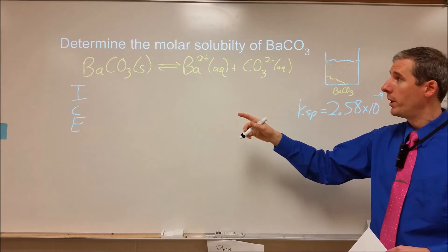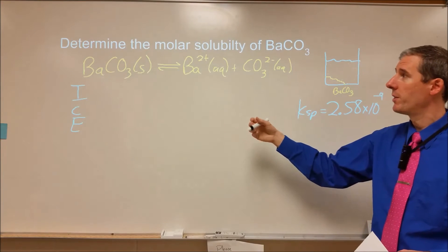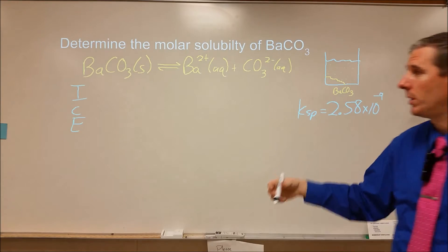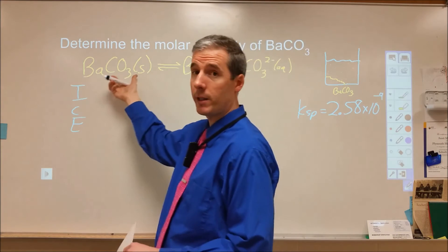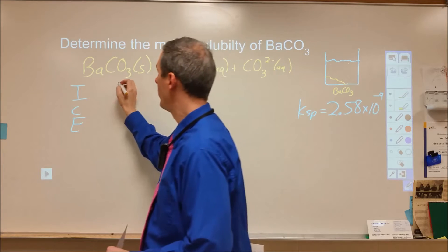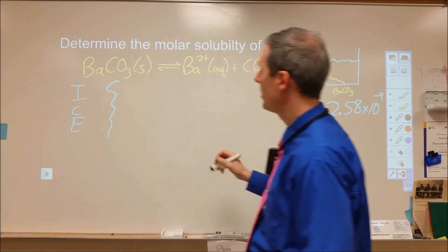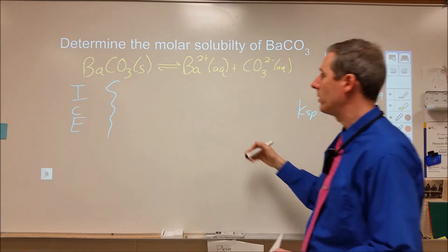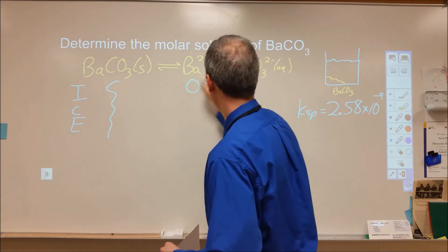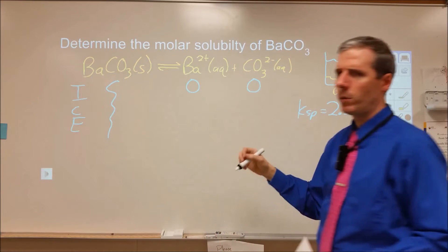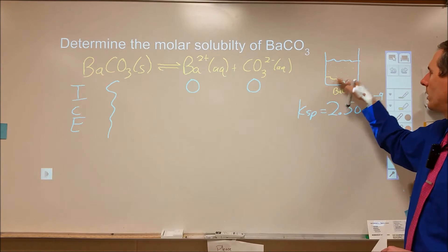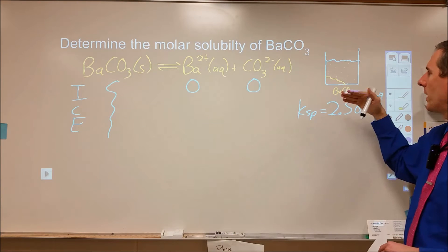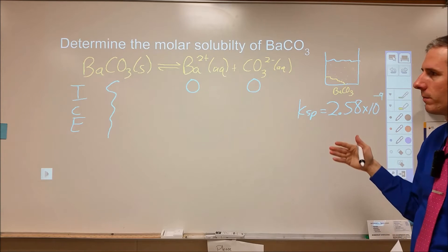In our ICE chart, we're going to plug in the initial amounts of everything, how they change, and what the equilibrium amounts are. For solids, their activity is 1, so this is not going to change in concentration. We can ignore that and omit it from the equilibrium calculations. Our initial amounts of dissolved substances are 0. We're looking at a case where we're putting the solid into the solution and then looking at how much of it dissolves.